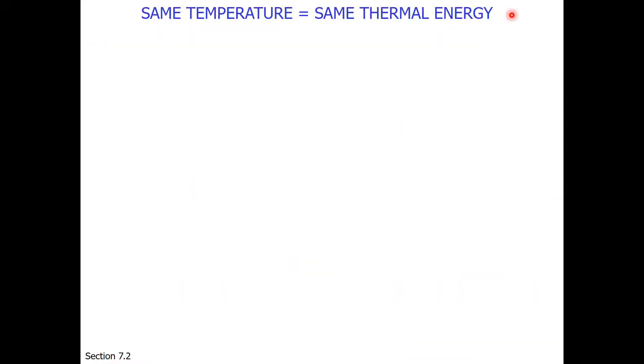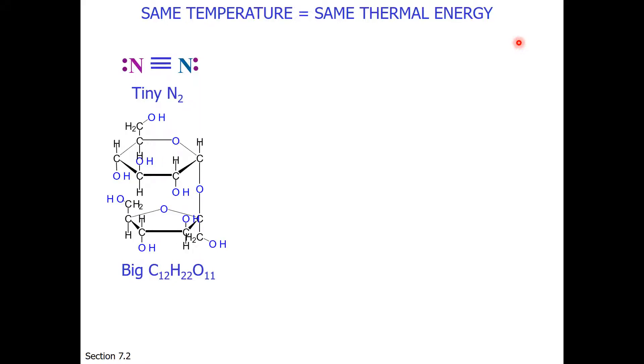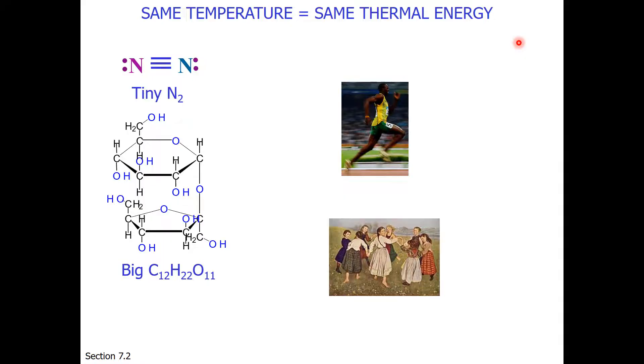One statement students often struggle with is chemicals at the same temperature will have the same thermal energy. So if you have a tiny nitrogen molecule, it's going to move around very quickly because it's light. If you have a sugar molecule, it won't move transitionally as much, but it will wobble. So when you think of gases, you might want to think of Usain Bolt, zooming quickly from one place to another. And when you think of larger molecules, you might want to think of multiple people in a circle dance.